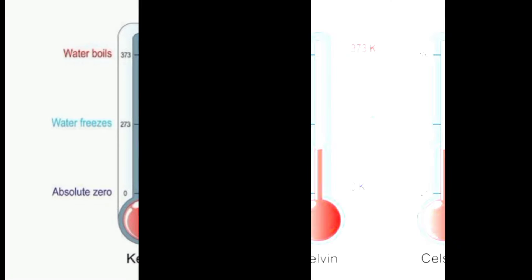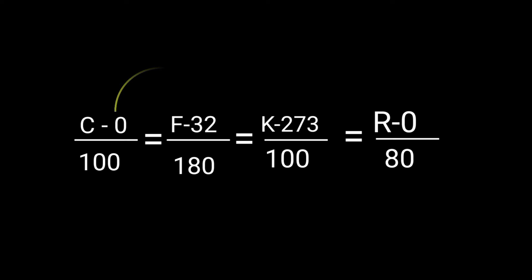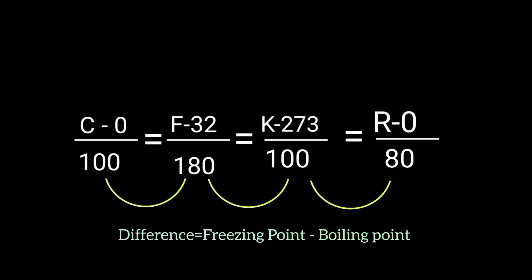All these temperature units can be used to denote the same degree of temperature. We just have to use a simple conversion formula. 0, 32, 273, and 0 denotes the freezing point of water while 100, 180, and 80 denotes the difference between freezing point and the boiling point.